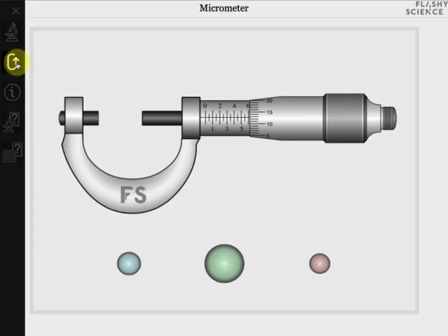The third icon gives you a new set of samples with different widths. You can click this as many times as you like to repeat the experiment and become familiarized with the micrometer.